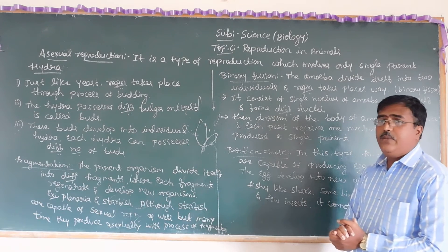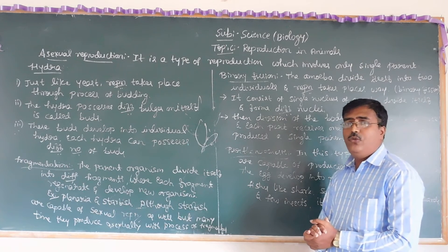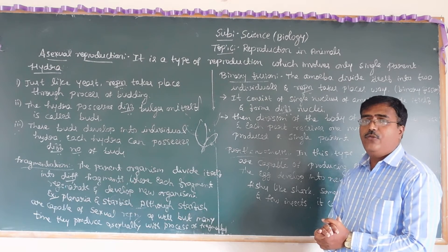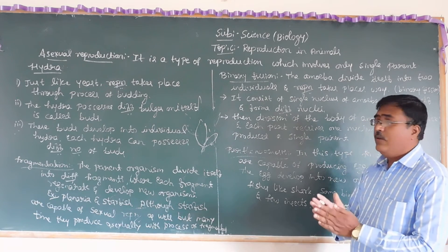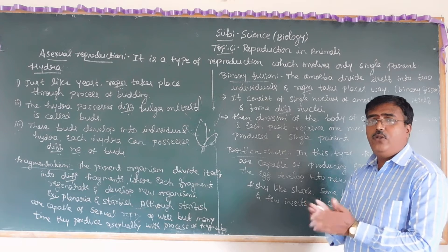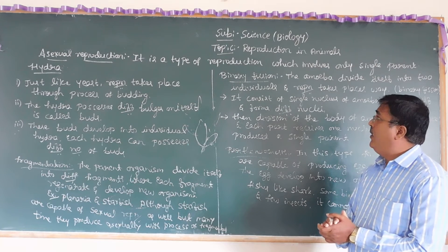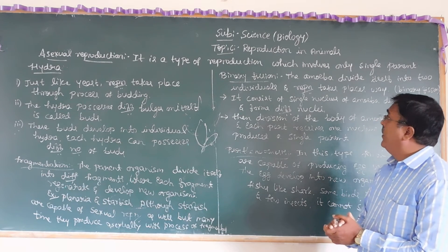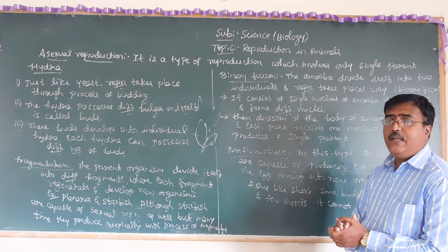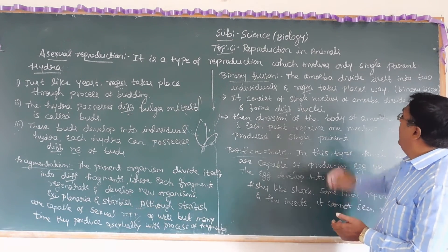Next is binary fission. Binary means two, and fission means a single individual divides into two equal parts — that is called binary fission. An example of binary fission is the amoeba.